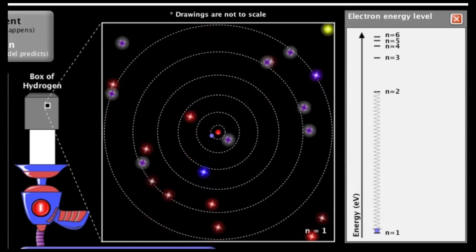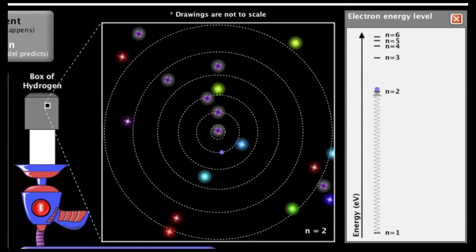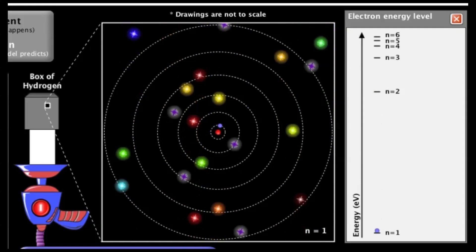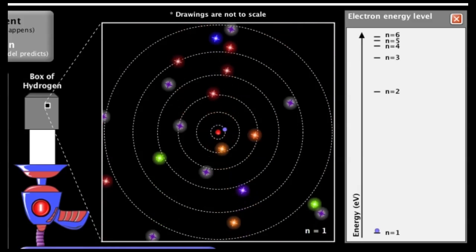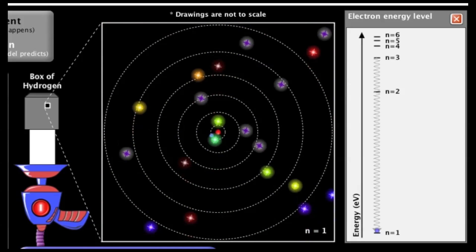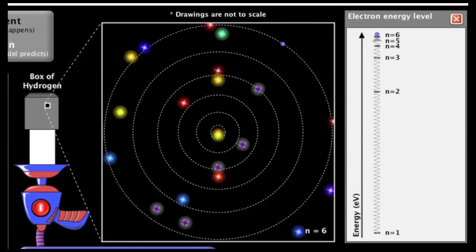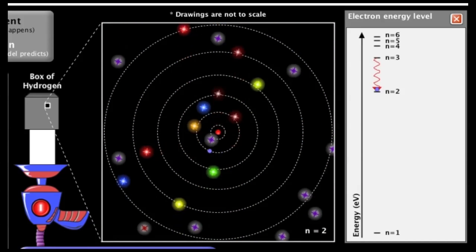Over at the left of our screen, we have a box of hydrogen. We have a photon gun that's shooting photons into the hydrogen. In the middle, we have our zoomed up image and you can see the electrons orbiting the nucleus and some of those photons have just the right energy to excite the electron.